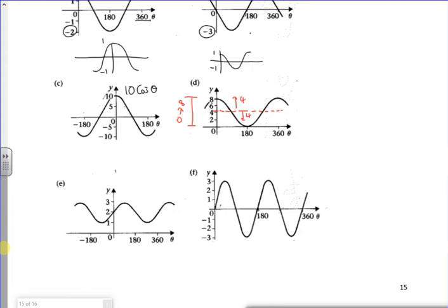So I think it's 4 cos, so that takes it between minus 4 and plus 4. And then add on 4 to move it up. So my 4 cos theta is a cos graph which goes between 4 and minus 4. Then I shift it up by 4 to make it into that graph.